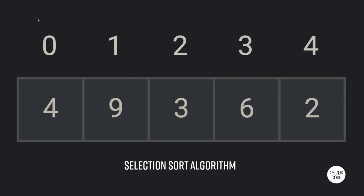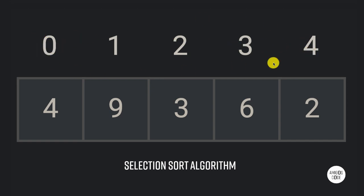Selection sort is one of these algorithms which is really simple to understand. Right here you can see I've got this array containing four, nine, three, six, and two. And above, you can see the actual indexes: zero, one, two, three, and four — those are the actual positions for your array.